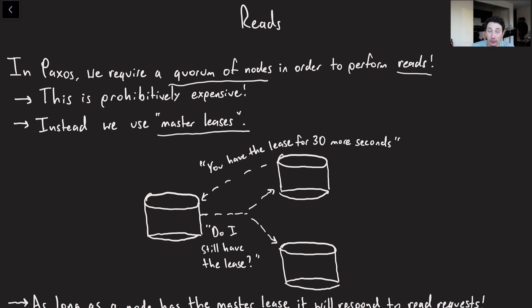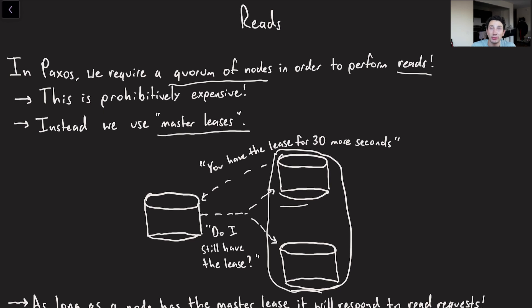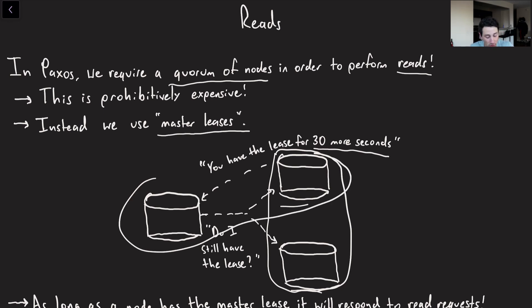A master lease is pretty simple. On some interval, the master gets approval from its electable replicas to stay as master for a certain amount of time. For example, with a replica set of size three, the master reaches out to two replicas asking if it still has the lease, and one has to respond confirming the lease for 30 more seconds. With its own permission plus a replica's, it achieves quorum and holds the lease. As long as the master has the lease, it can respond to read requests.